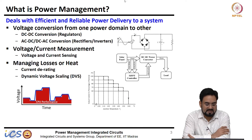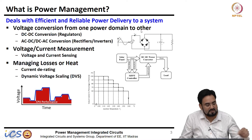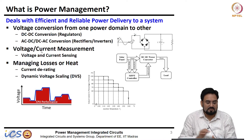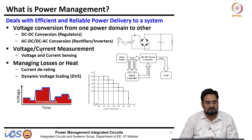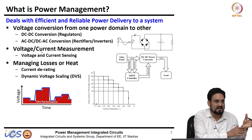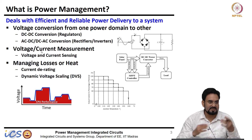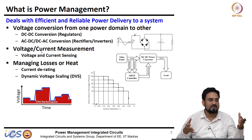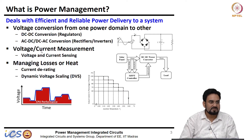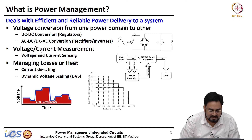So, what is power management? Power management deals with efficient and reliable power delivery to a system. It could be voltage conversion from one power domain to another — meaning you have a DC input and you want a different DC output voltage, which is called DC-to-DC conversion. For example, if you have 5 volts and your system requires 1.2 volts, you have to down-convert from 5 volts to 1.2 volts — that is DC-to-DC conversion.